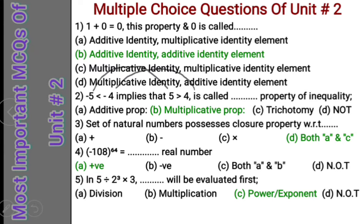Question 4: Minus 108 whole power 64 is equal to what type of real number? When the base is negative, check the power — if the power is an even number the result will be a positive real number; if the power is an odd number the result will be a negative real number. Here the base is minus and the power 64 is even, so the result will be a positive real number. Option A is correct.